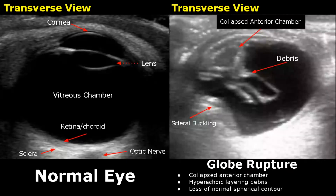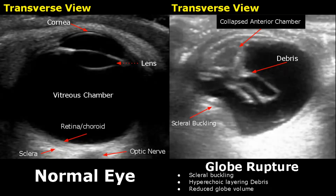In a globe rupture, the anterior chamber can be collapsed and hyperechoic layering debris is present. There is loss of the normal spherical contour of the eye — the eyeball has lost its spherical shape. Scleral buckling is seen, deforming the eye, and the volume of the globe will be reduced.